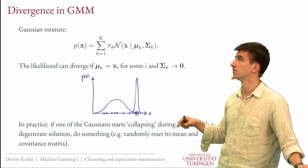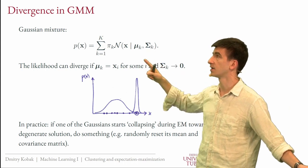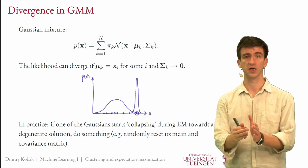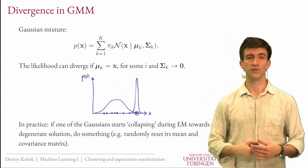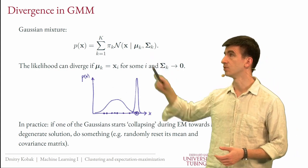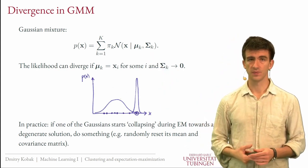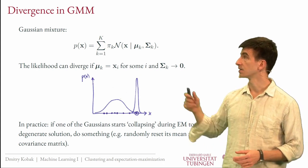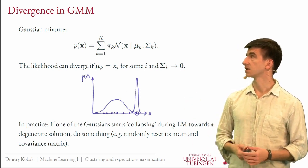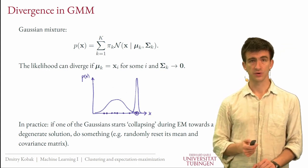Conceptually, this degenerate solution reveals a problem with the likelihood loss function — it allows these trivial collapses. This can be prevented by placing a prior on the parameters (e.g., preventing sigma from becoming very small), such as in a fully Bayesian setting with priors on sigma and mu, but in the basic MLE setting the model can diverge.